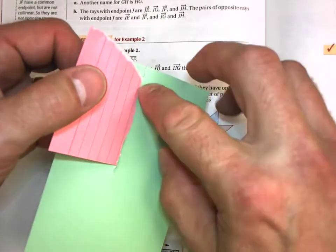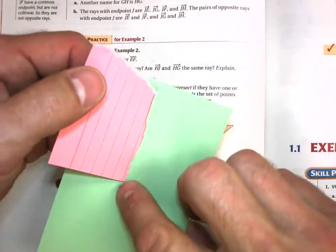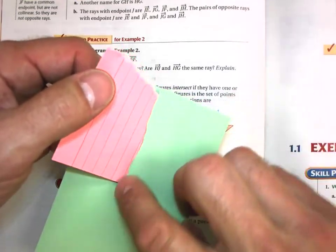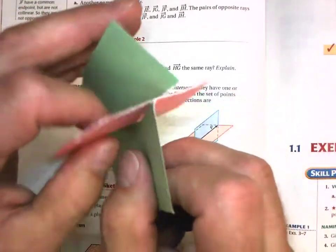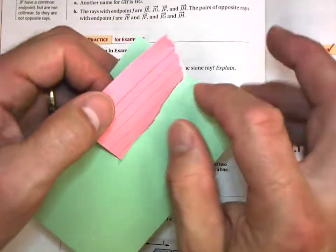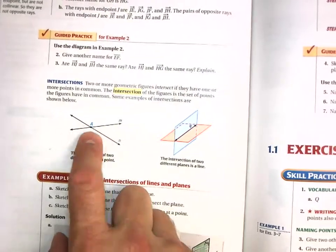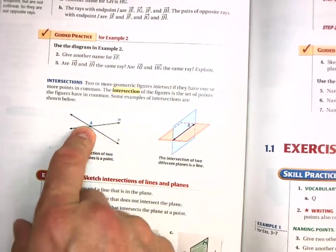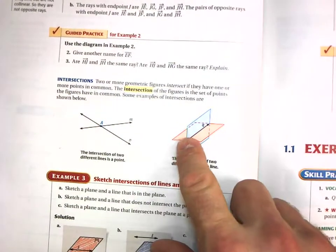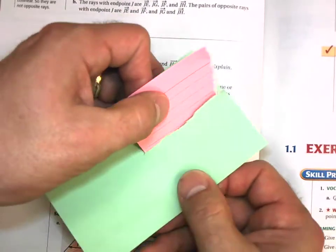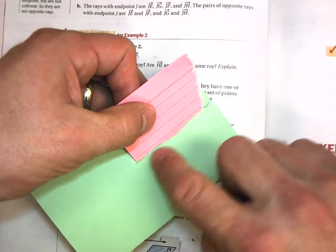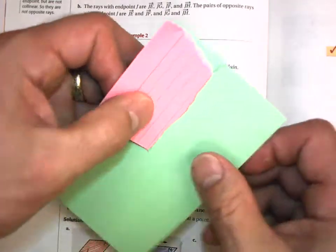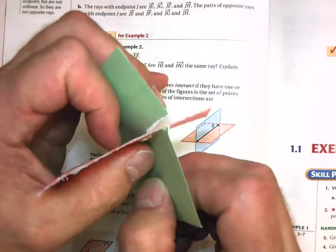notice that this line is the intersection of these two planes. So when I had two lines that intersect, it created an intersection point. When I have two planes that intersect, it creates a line of intersection between those two planes.